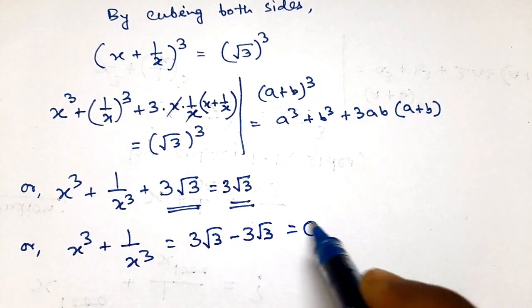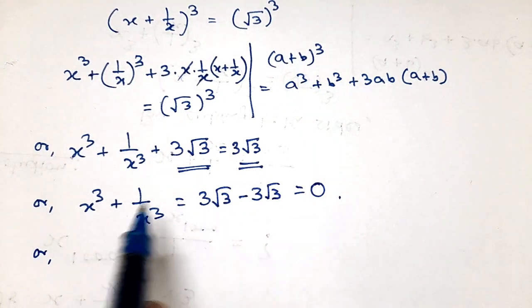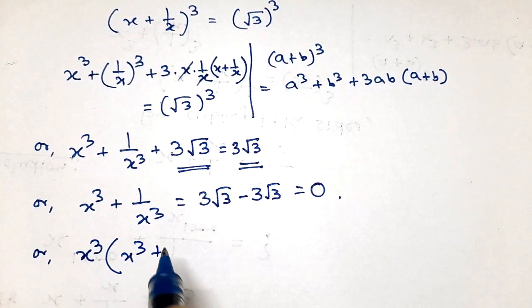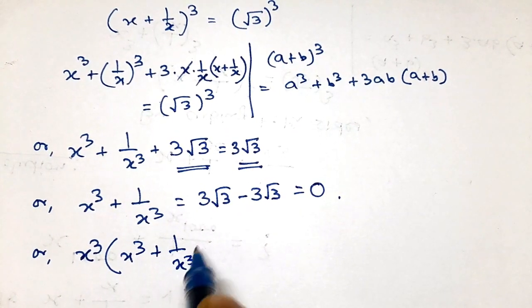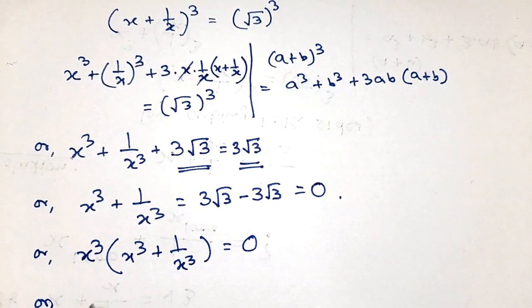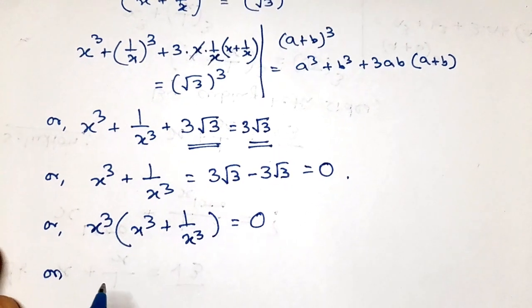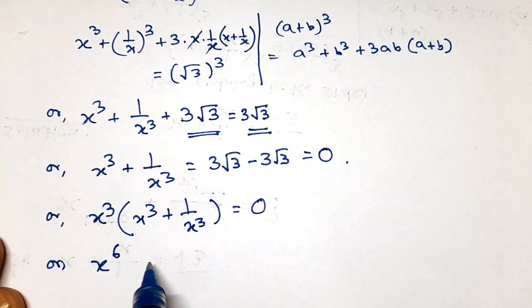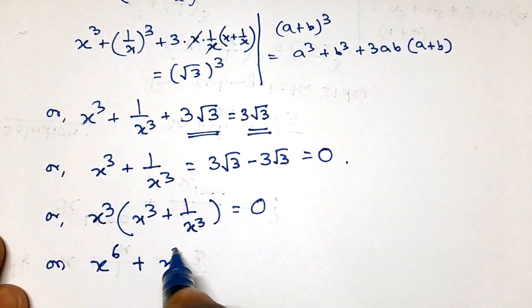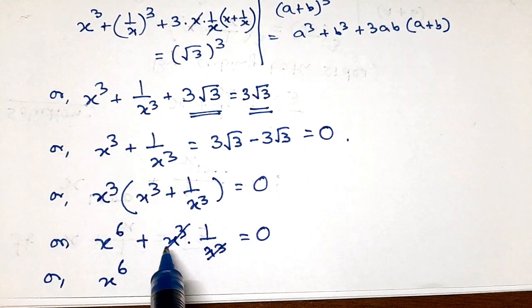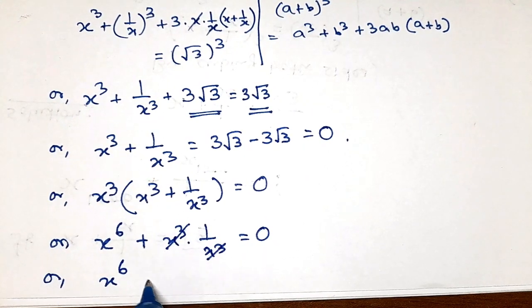So x³ + 1/x³ equals 3 root 3 minus 3 root 3, that is equals to 0. If we multiply both sides by x³, we get x³ times (x³ + 1/x³) equals 0 times x³, which is also 0. So x to the power 3 plus 3 is x⁶, plus x³ times 1/x³ cancels out, giving us x⁶ + 1 = 0.